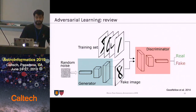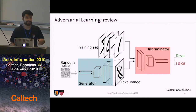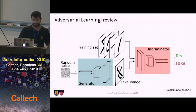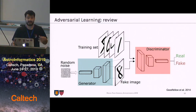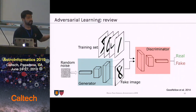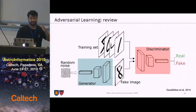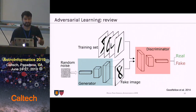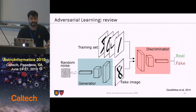Another important class of methods is adversarial learning. In adversarial learning, we have a generator that tries to generate data that looks like the real one, and a discriminator which tries to distinguish if the data is real or was generated by the generator. Training this model in a minimax fashion, we encourage the generator to generate data to fool the discriminator, and we encourage the discriminator to not be fooled by the generator. Doing that, we can capture the distribution of the data.